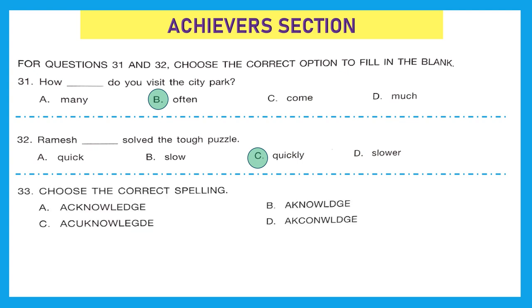Question 33, choose the correct spelling. Looking at the question, it seems they are talking about acknowledge. The right spelling is option A, A-C-K-N-O-W-L-E-D-G-E. Acknowledge.